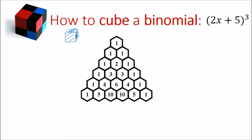I explain how to get Pascal's triangle in a separate video. Because we are finding a cubed binomial, we need to go down Pascal's triangle to the third row — keeping in mind that the first row is actually row 0. So we go down one row, two rows, three rows, and it is in fact this row whose information we're going to use. We'll use the numbers 1, 3, 3, and 1.